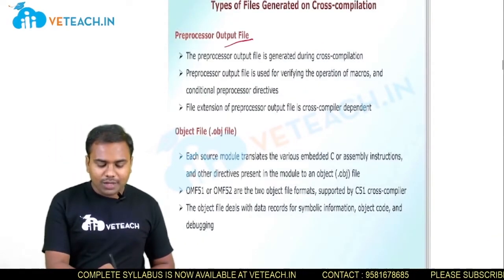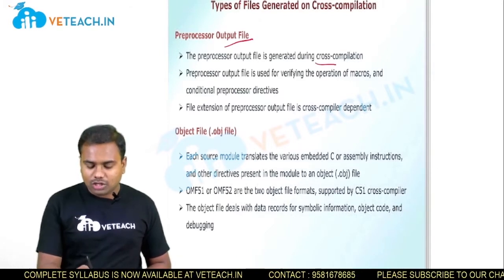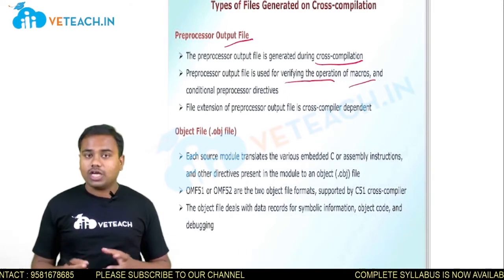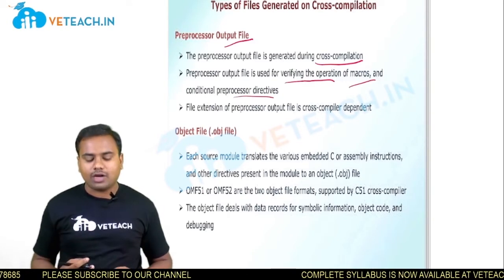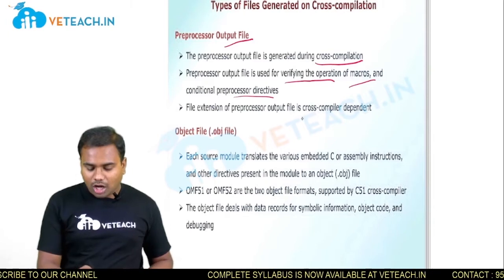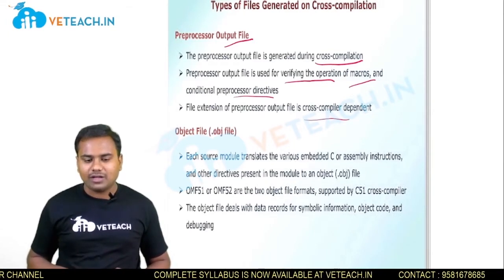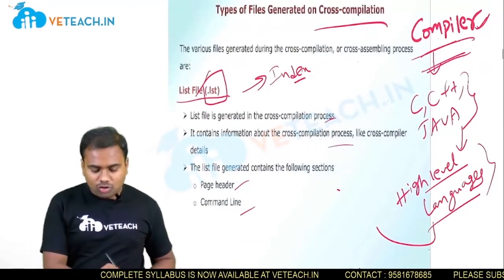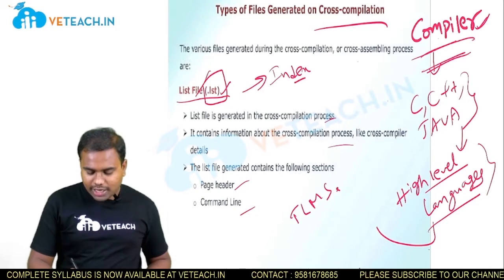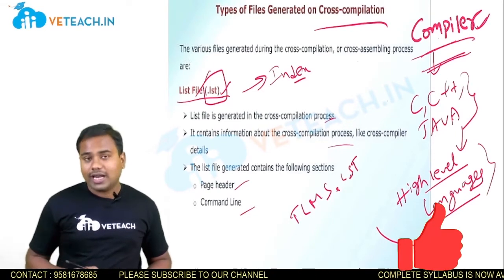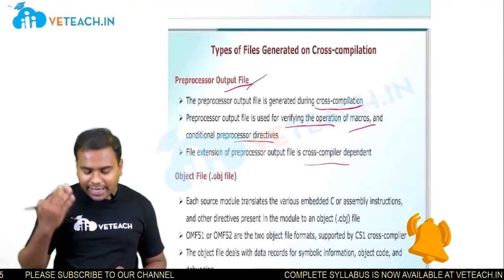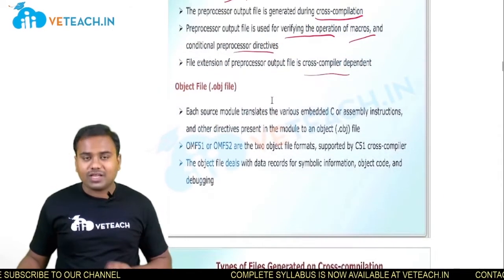The next file is the preprocessor output file, which is also generated during the cross compilation process. This preprocessor file is used to verify the operation of macros and the conditional preprocessor directives. If you are having any preprocessor directives, then this preprocessor output file will be generated. The file extension of the preprocessor file will be cross compiler dependent — it doesn't have any particular extension. For example, the traffic light management system LST file would be named 'traffic_light_management.LST,' but the preprocessor output file has no fixed extension — it depends on the cross compiler.